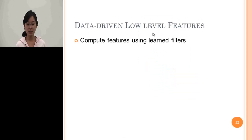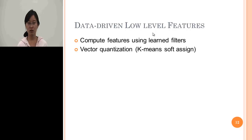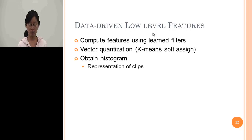After learning the filters from different modalities, we compute features using the learned filters. The features are a vector of filter responses. We then apply K-means to quantize the features into a codebook using soft assignment, and each clip is represented as a histogram, like the traditional bag-of-words representation.